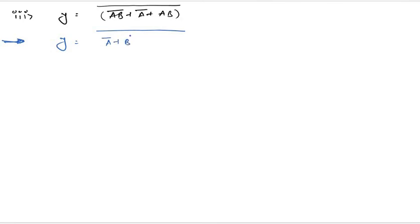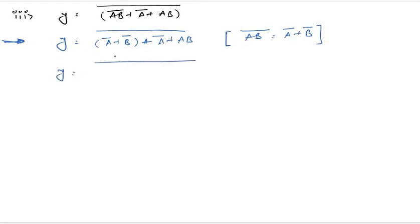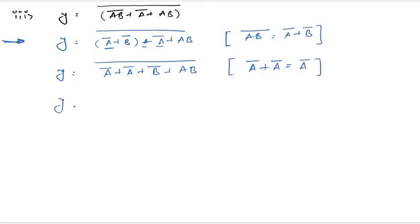Applying De Morgan's theorem, we can write: ab whole complement equals a-bar plus b-bar. So y becomes a-bar plus b-bar, plus the remaining terms a-bar plus a. Now observe: a-bar plus a-bar — since we are adding the same variable, a-bar plus a-bar equals a-bar. So we can write a-bar plus b-bar plus a into b.